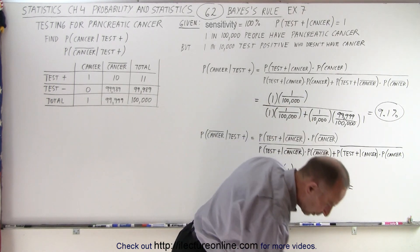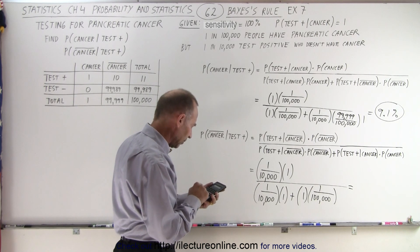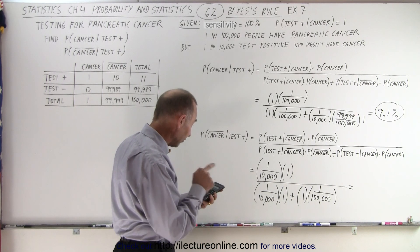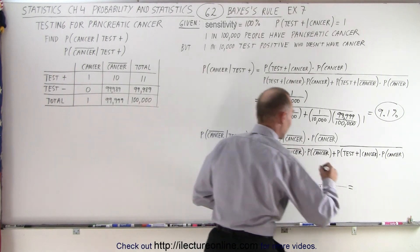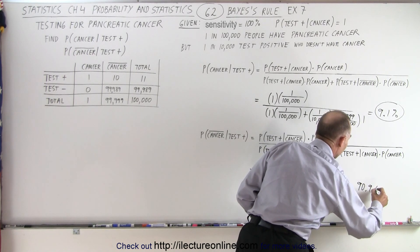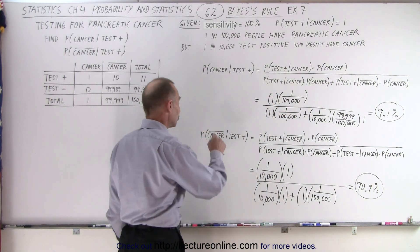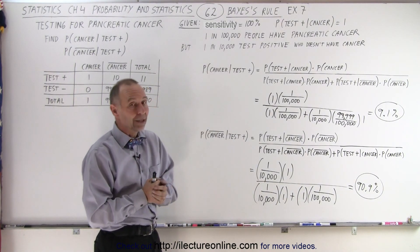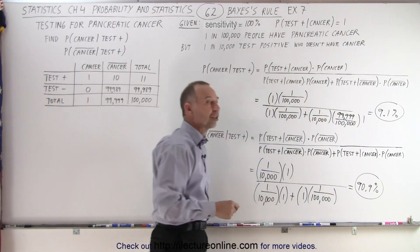Let's calculate what that is equal to. In the denominator we have 1 divided by 10,000 plus 1 divided by 100,000. We take that to the numerator and divide by 10,000. And we get 90.9%, which of course is indeed 100 minus the 9.1%. So the remainder is the probability that you don't have cancer if you test positive.